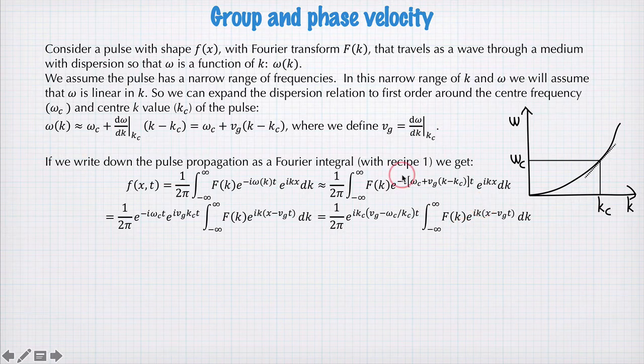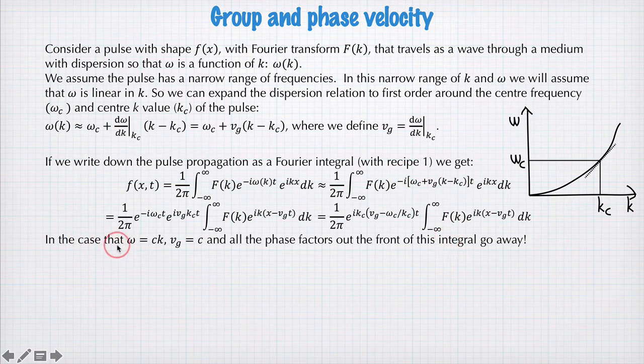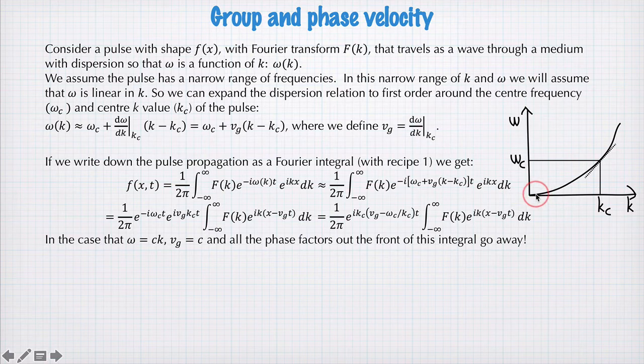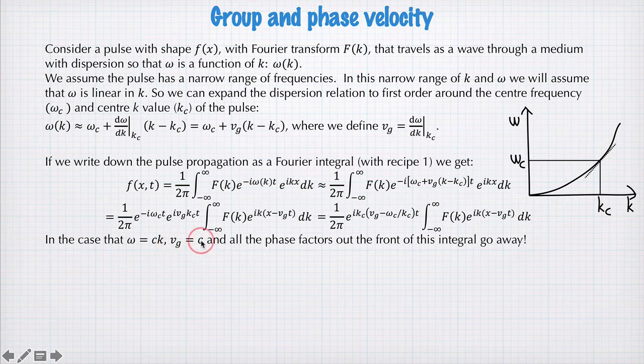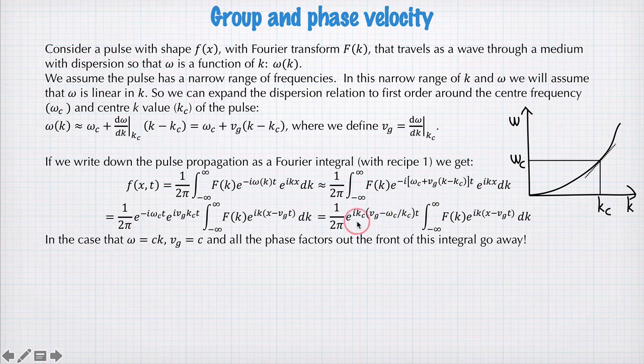Now we have the rather difficult job of interpreting this integral. Let's first consider the situation where omega is equal to ck. So we're turning the dispersion off. We're saying that this dispersion curve is no longer a curve, it's just a straight line. That's what we have when you have no dispersion. In that case, vg of the group velocity is equal to c, the slope of the line, and omega divided by k is also equal to c. So this phase factor out the front here goes away, because vg minus omega c divided by kc is zero.